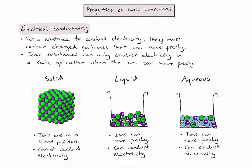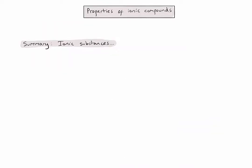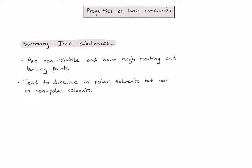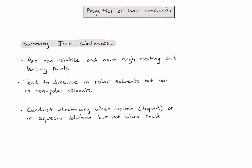Let's now summarize the key points from this video. Firstly, ionic substances are non-volatile and have high melting and boiling points. Secondly, they tend to dissolve in polar solvents like water, but not in non-polar solvents. Finally, they can conduct electricity when molten or in aqueous solution, but not when solid. You'd be expected to know these properties and also be able to explain them in IB exam questions.